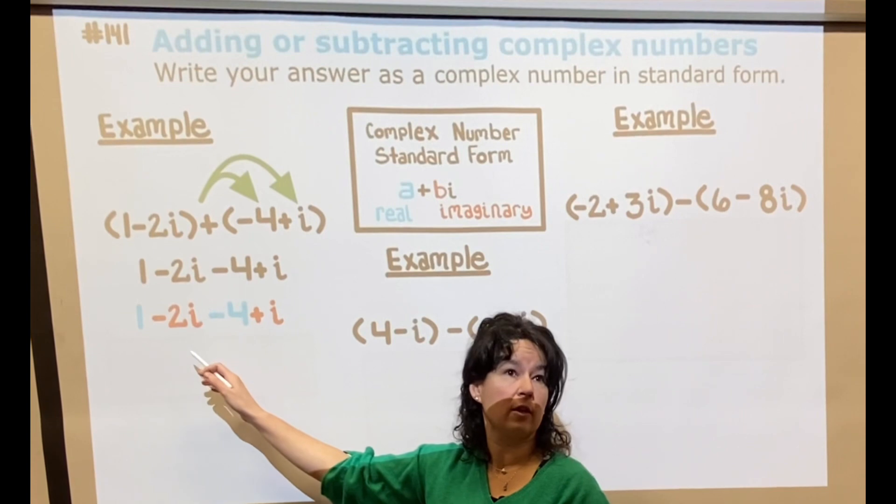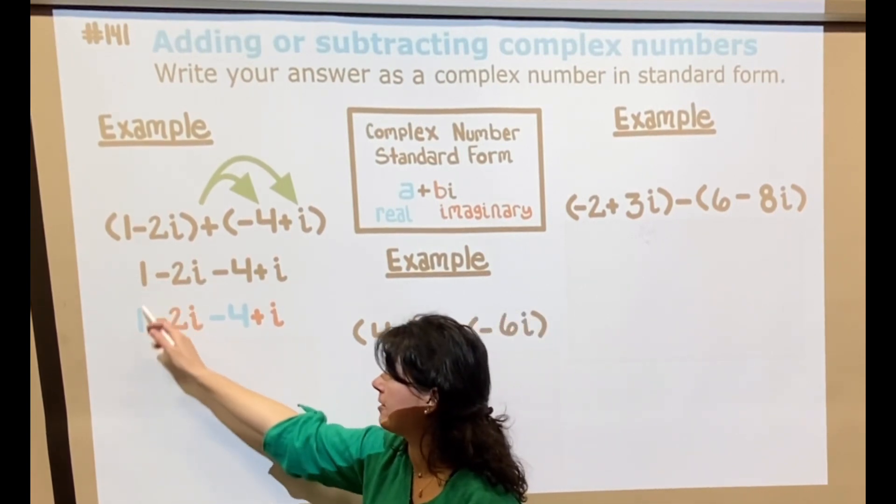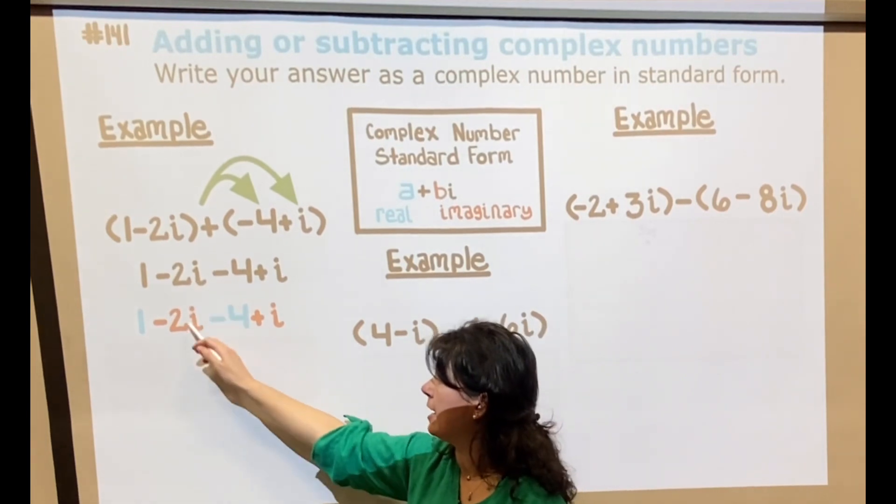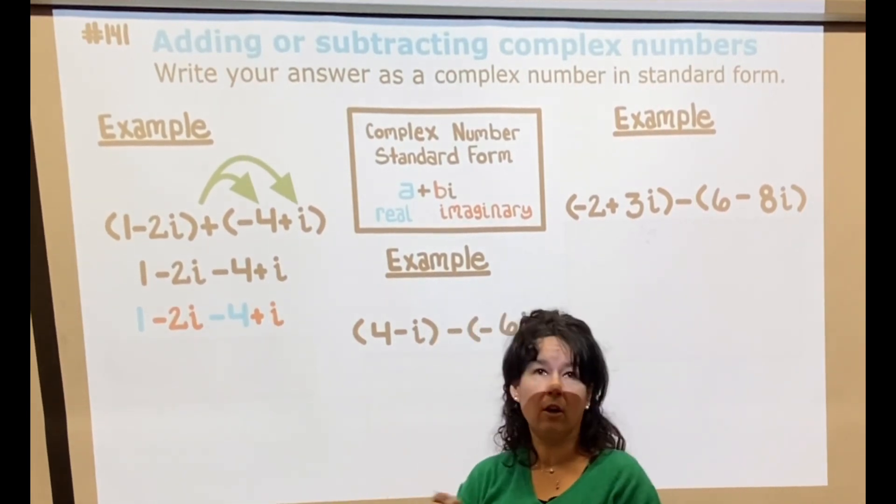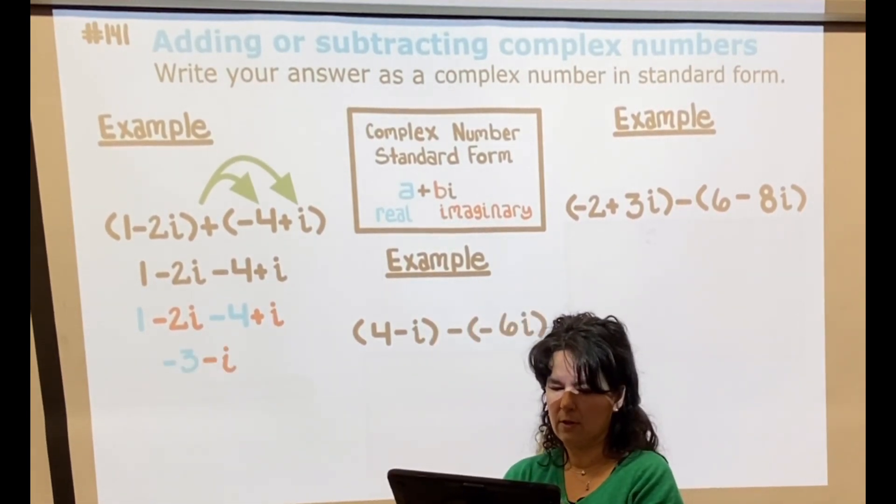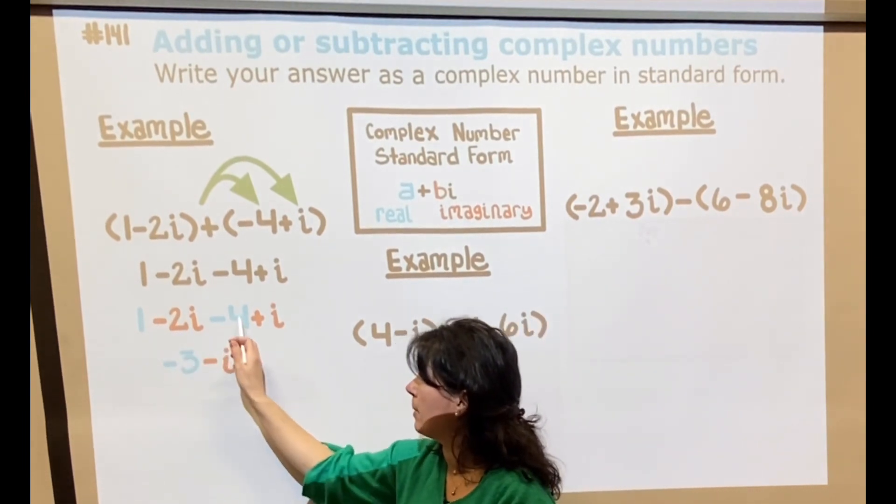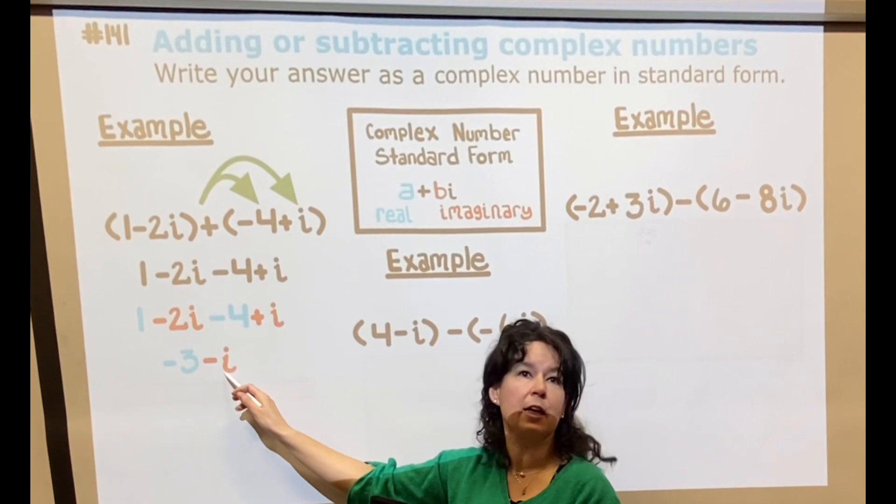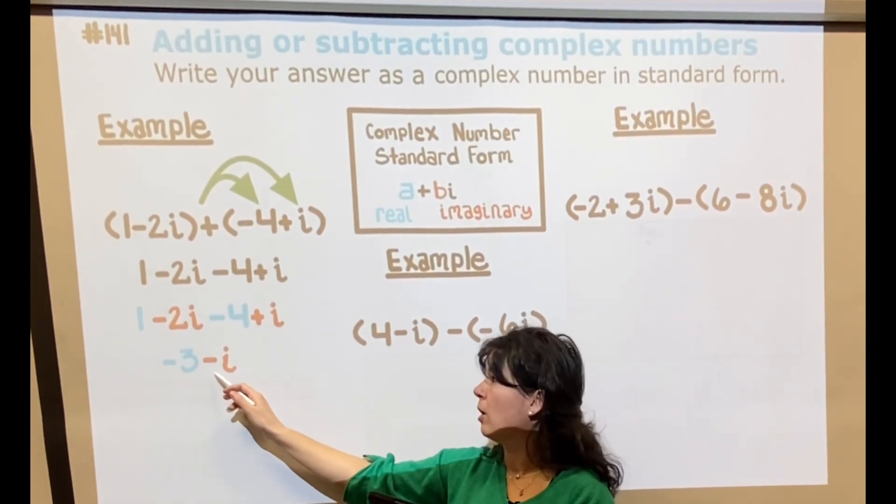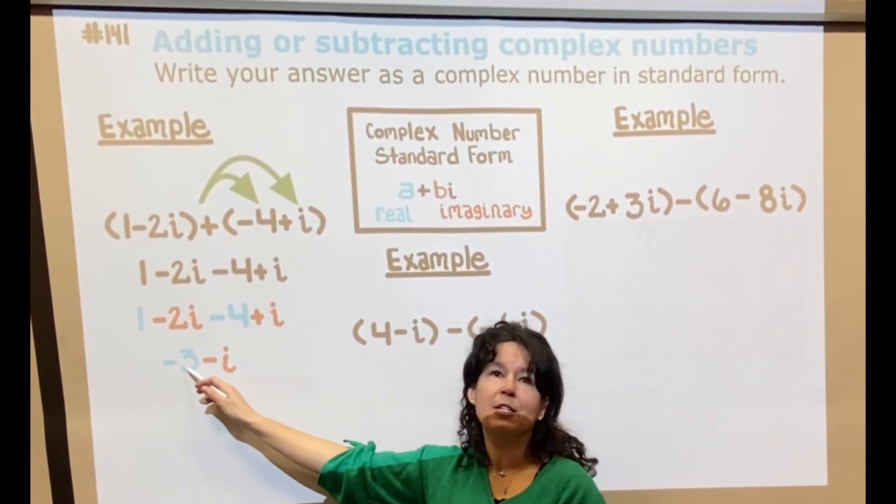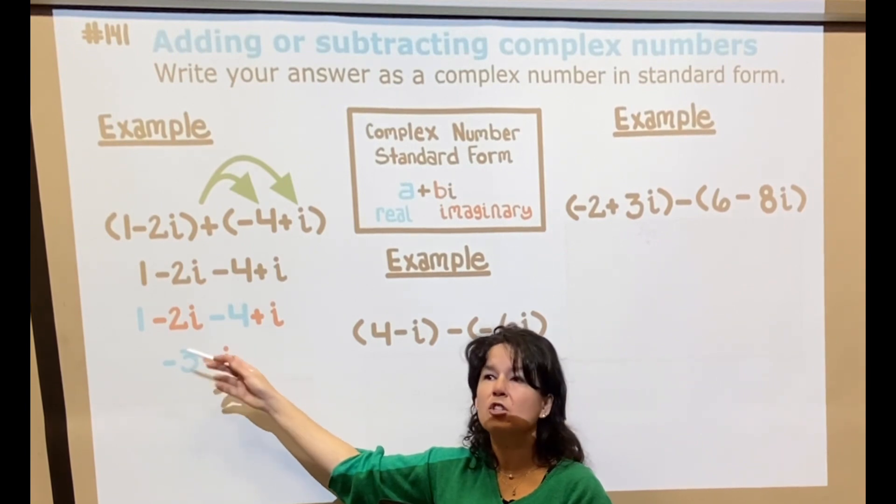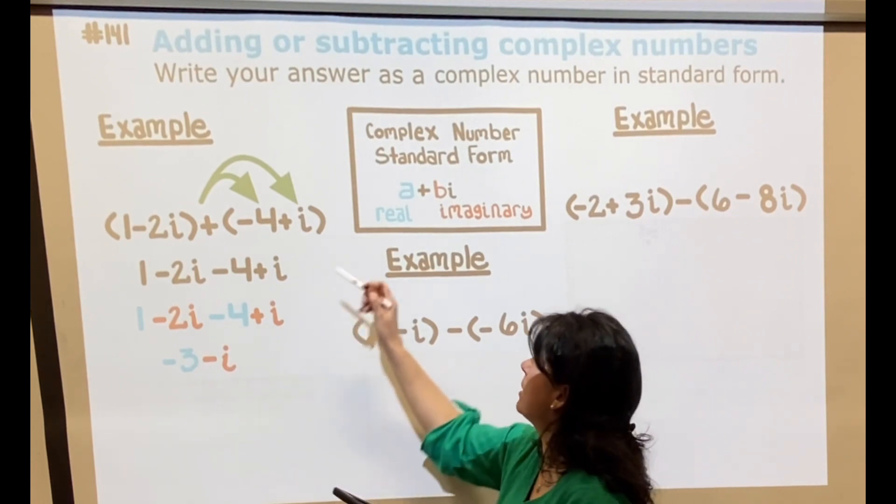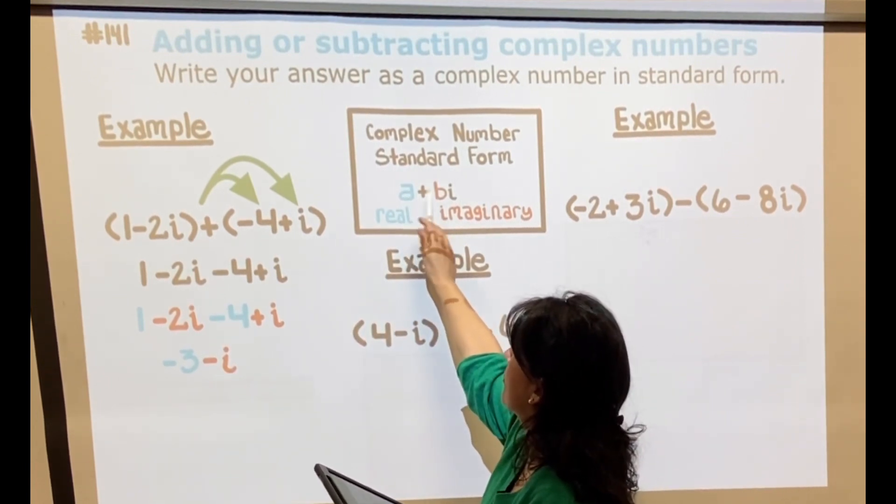I just color-coded this just to emphasize again that the 1 and the negative 4 are like terms, and the negative 2i and the i are like terms. So 1 minus 4 is negative 3, negative 2i plus i is negative i. Now if you wrote negative i minus 3, it's correct, it's just not in the best format for your final answer because standard form is the number first and the i's last.